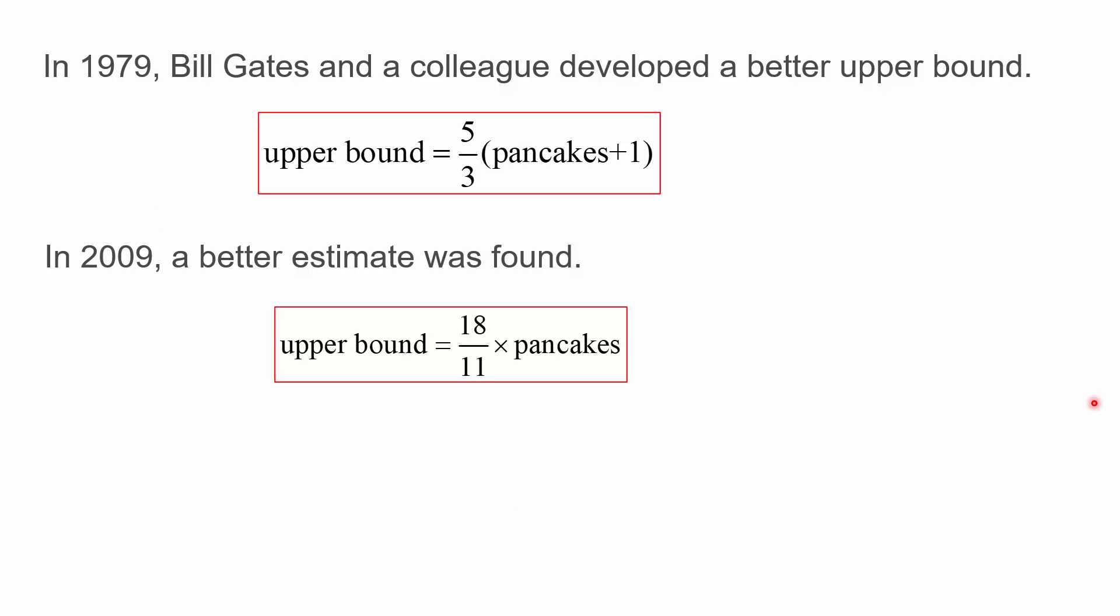Now it turns out that back in 1979 Bill Gates, yes the Bill Gates who is owner of Microsoft, when he was a student at university in collaboration with a colleague performed some quite complicated mathematics to find a better upper bound and here it is here: five over three times the number of pancakes plus one. That is more accurate as you will see in a moment than the one that we've developed. But about twenty years later a group of mathematicians managed to find an even better estimate which is this one: eighteen divided by eleven times the number of pancakes.